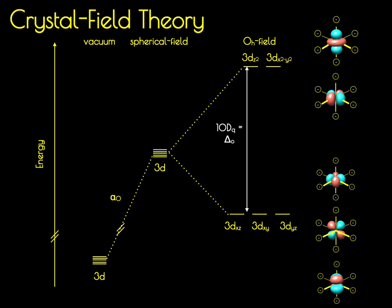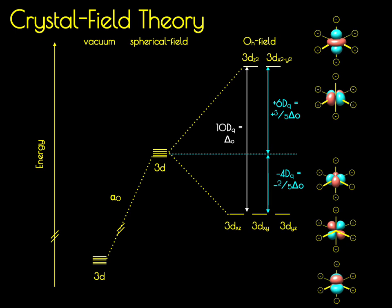In the crystal field model, the energy at which the orbitals are stabilized and destabilized is conserved relative to the spherical field. If we generate a barycenter, we find that the dz² and dx²-y² are destabilized by 6dq or three-fifths delta O, while the dxz, dyz, and dxy are stabilized by 4dq or minus two-fifths delta O. This stabilization and destabilization is done to conserve energy relative to the spherical field. In an octahedral field, the dz² and dx²-y² are degenerate with one another, while the xz, yz, and xy are degenerate with each other — a two-fold degenerate pair and a three-fold degenerate grouping of orbitals in octahedral symmetry.